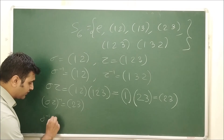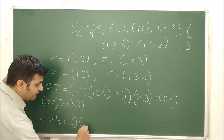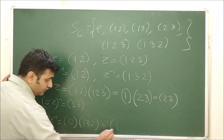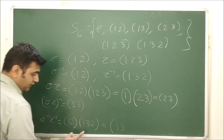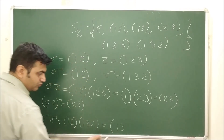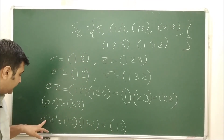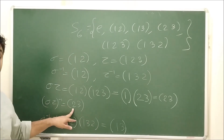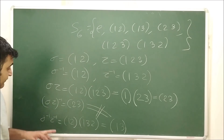Now what is σ⁻¹∘τ⁻¹? σ⁻¹ = (1 2) and τ⁻¹ = (1 3 2). Applying τ⁻¹ first: 1→3, then σ⁻¹: 3→3. Next: 3→2, then σ⁻¹: 2→1. So σ⁻¹∘τ⁻¹ = (1 3). We can see that σ⁻¹τ⁻¹ = (1 3) while (σ∘τ)⁻¹ = (2 3), and these two are not equal.